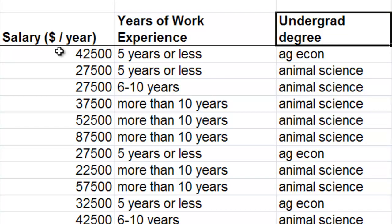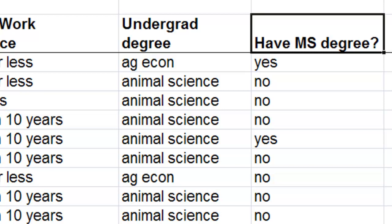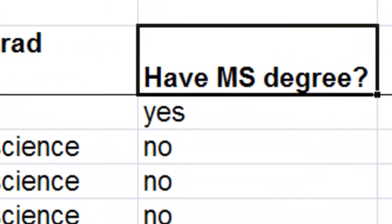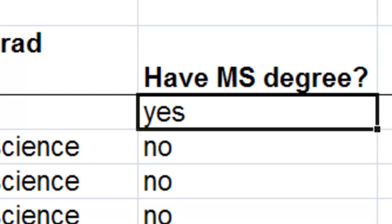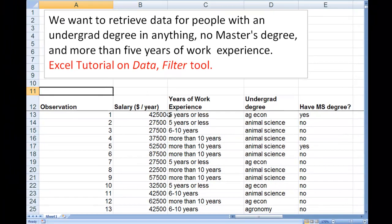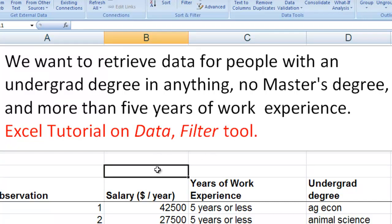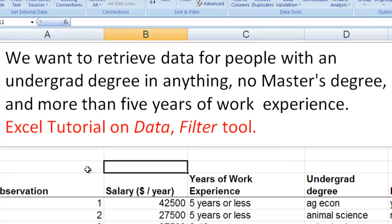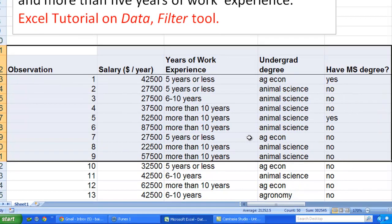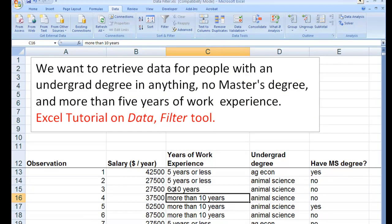In the undergrad degree column, employees will have either ag econ, animal science, or agronomy. In the last column, whether they have an MS degree — yes means they do have a Masters of Science degree, no means they don't. Suppose we wanted to create a histogram for people with any undergrad degree, no Masters degree, and more than five years of work experience. To do that, we first need to retrieve only those observations using a data filter tool.